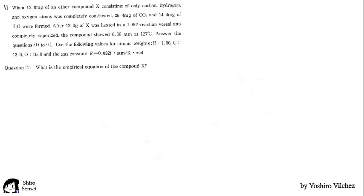And there are the answers. When 12 mg of an ether compound X consisting of only carbon, hydrogen and oxygen atoms was completely combusted, 26.4 mg of CO2 and 14.4 mg of H2O were formed. After 12 grams of X was heated in a 1 liter reaction vessel and completely vaporized, the compound showed 6.56 atmospheres at 127 degrees. Question 1: What is the empirical equation of the compound X?